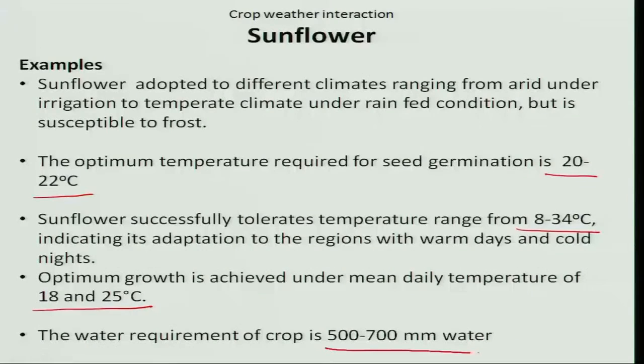Therefore, farmers are advised to give light irrigation during the flowering phase. The water requirement of the crop is almost 500 to 700 mm to complete its entire life cycle.